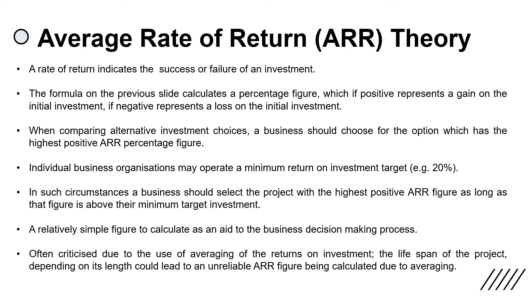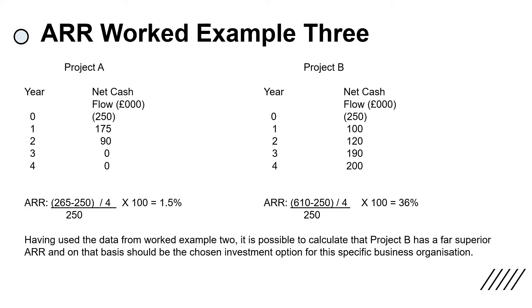Realistically that is the only factor that normally causes a problem. The criticism of the method involves averaging — the longer the time span of the project, the longer you average over and therefore the less reliable the figures are. In the simple worked example, Project B has a far higher return, so that's the project which should be selected on a numerical quantitative basis.